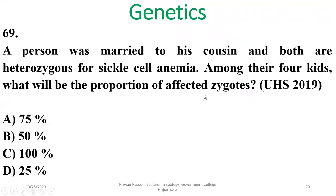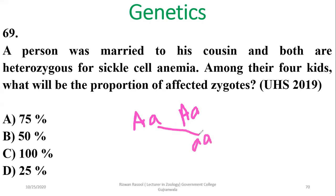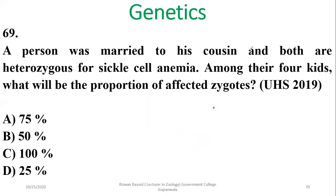Question 69: A person married his cousin and both are heterozygous for sickle cell anaemia. Among four children, what would be the proportion of affected zygotes? If both parents are heterozygous (Aa × Aa), the chance of having homozygous recessive offspring (aa) is 25% — one out of four. Normal zygotes will be 75%. The right option is 25%; delta is the right answer.